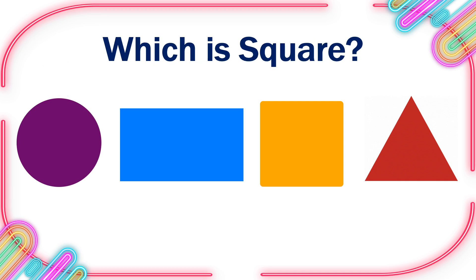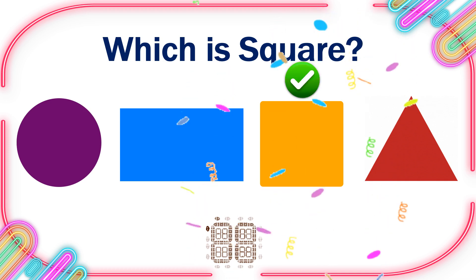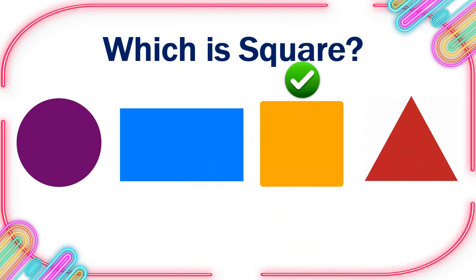Which is Square? 10, 9, 8, 7, 6, 5, 4, 3, 2, 1, 0. This is the right one.